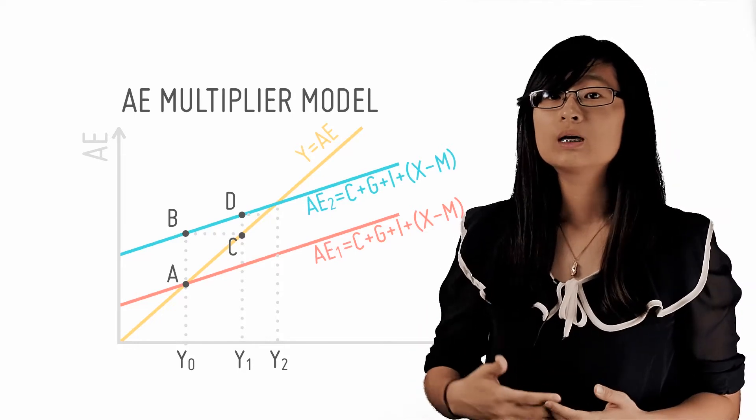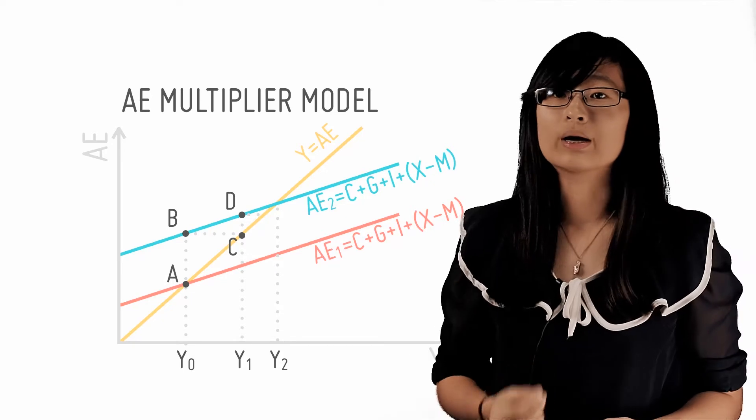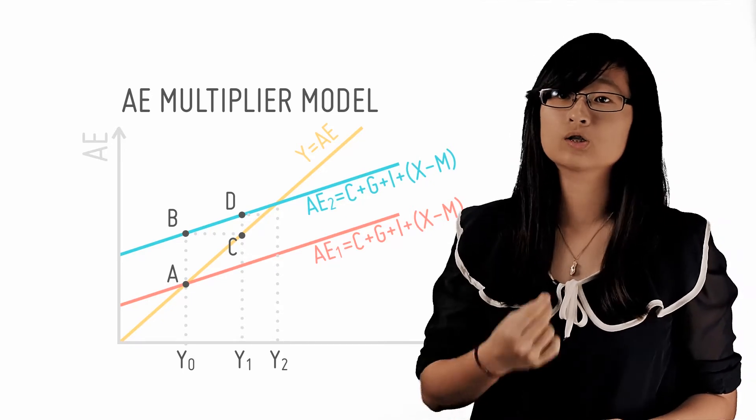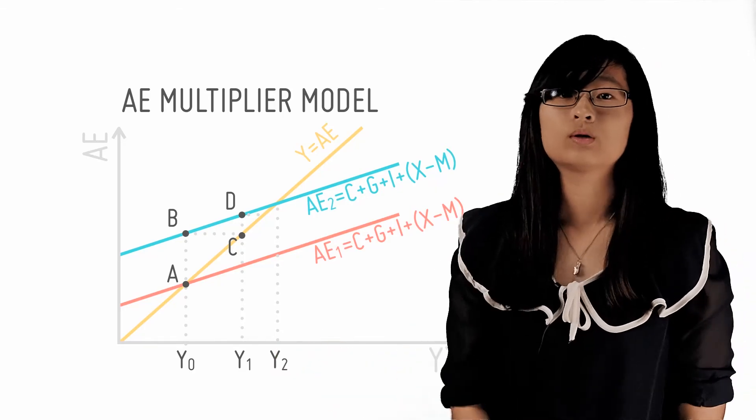So when the total leakages is equal to the initial autonomous increase in national income, the multiplier effect stops, resulting in a new equilibrium level of national income, which is Y2. Thank you.